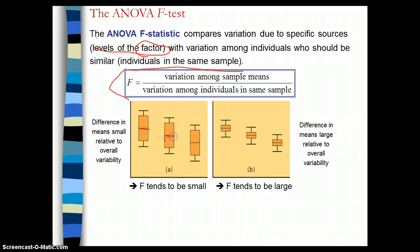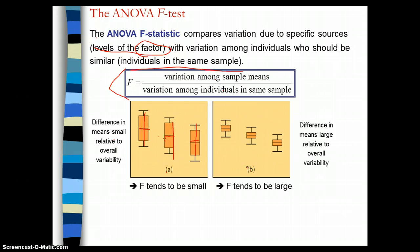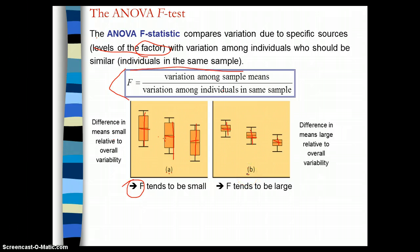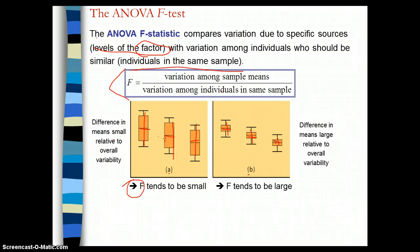The difference in means is small relative to the overall variability within each of the groups. But in example B, the difference in means is large relative to the overall variability. So in example A, the F will tend to be small — meaning there's less likelihood of there being a significant difference in the group means. But in example B, the F will tend to be large, meaning there is a greater chance of a significant difference between each of these groups when the ratio of variation among sample means to individual means within the groups is like this.